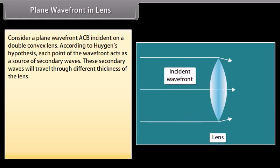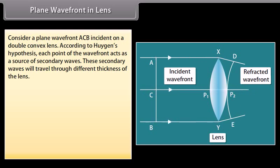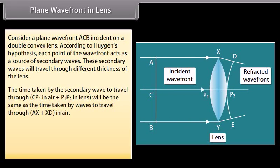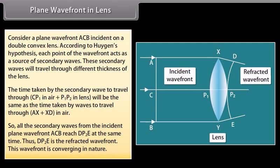Plane wavefront in lens: consider a plane wavefront ACB incident on a double convex lens. According to Huygens' hypothesis, each point of the wavefront acts as a source of secondary waves. These secondary waves travel through different thicknesses of the lens. The time taken by the secondary wave to travel through CP1 in air plus P1P2 in the lens equals the time taken by waves to travel through AX plus XD in air. All secondary waves from the incident plane wavefront ACB reach DP2E at the same time. Thus, DP2E is the refracted wavefront, which is converging in nature.